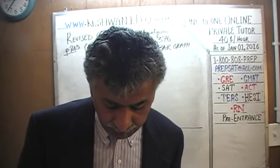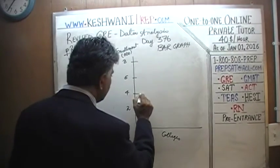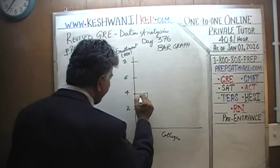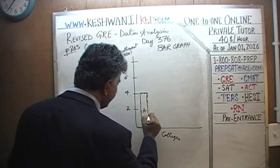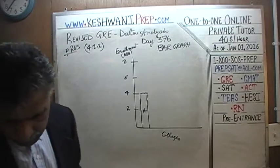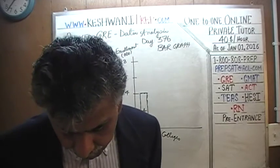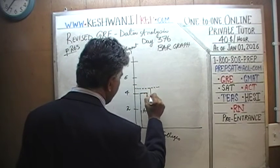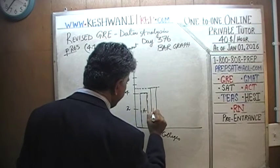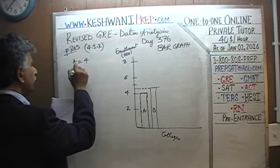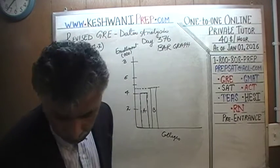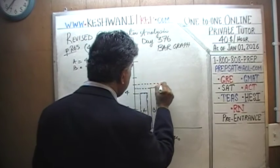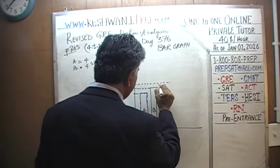I am just copying the data from the graph. College A has 4,000 students. College B, as you read the graph carefully, is 4 and a half. College C is just a little under 5 — we write that as 5 with a minus sign on top.